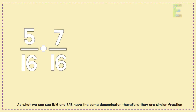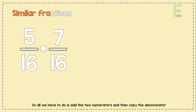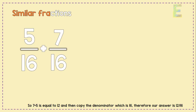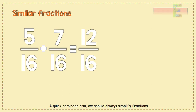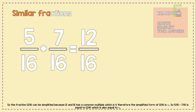As we can see, 5 over 16 and 7 over 16 have the same denominator, therefore they are similar fractions. So all we have to do is add the two numerators and then copy the denominator. 7 plus 5 is equal to 12, and then we copy the denominator which is 16, therefore our answer is 12 over 16.